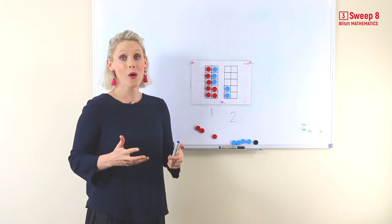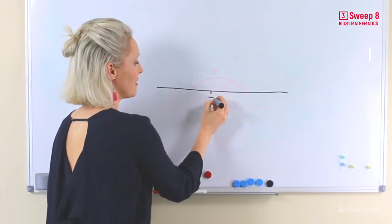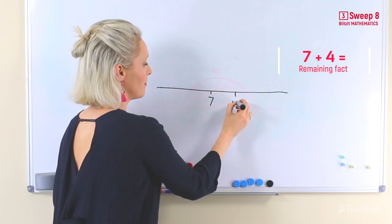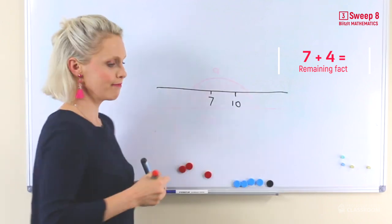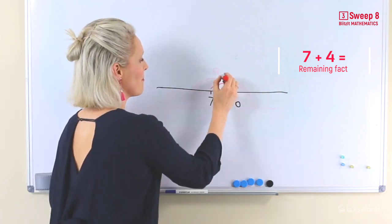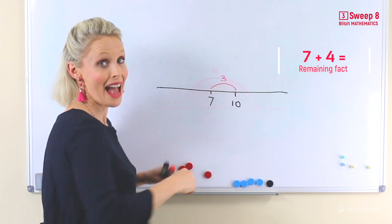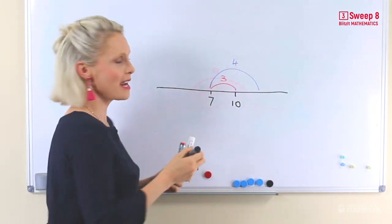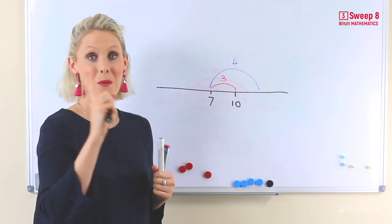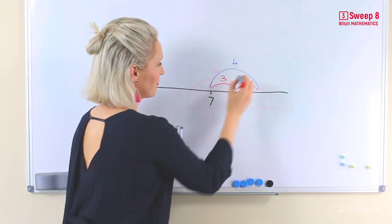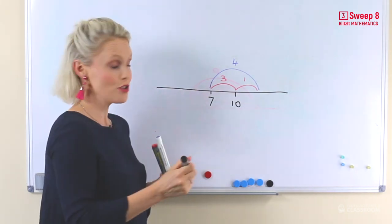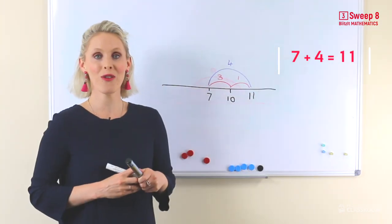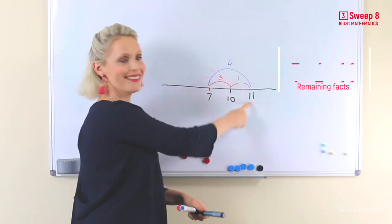Now let's look at 7 and 4 on an open number line. 7. Now, how many more do we need to get to 10? Hmm, 3. But we are adding 4. So, 3 add what equals 4? 3 add 1. Now, we know that 10 add 1 equals 11. That's right! 7 and 4 or 4 and 7 equals 11.